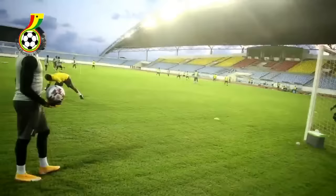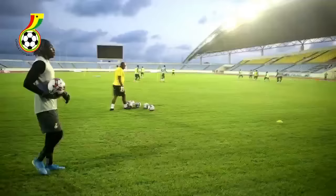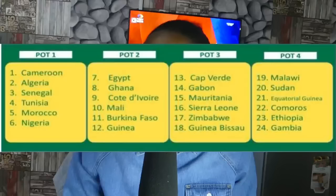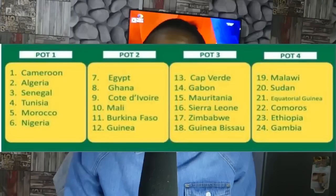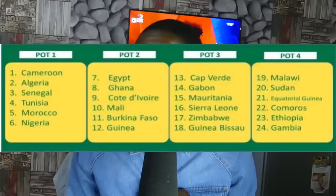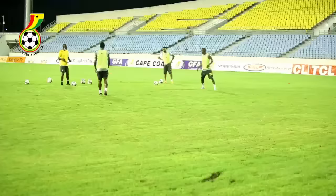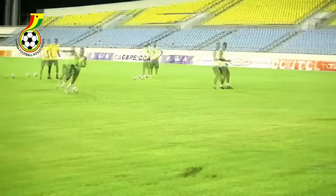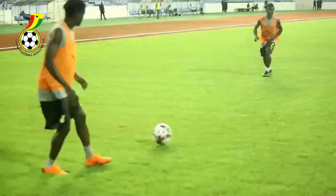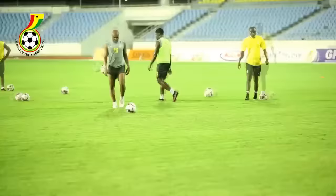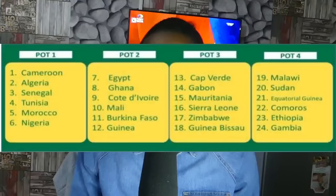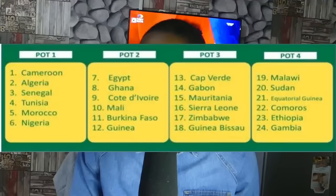The draw for Total Energies AFCON will take place on 17th August. The 24 qualified teams are allocated to four pots of six teams each, based on the FIFA Coca-Cola ranking released on 12th August 2021. In that latest ranking, Ghana were placed 49th. Based on this ranking, the top four teams are allocated to Pot 1 along with hosts Cameroon and title holders Algeria. The remaining 18 teams are allocated to three remaining pots — Pots 2 to 4 — according to their ranking in descending order.